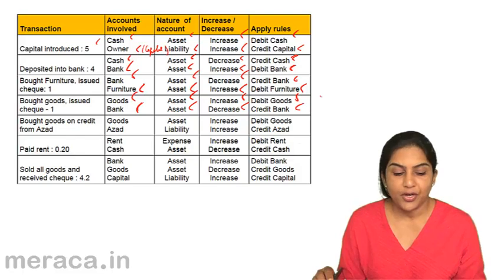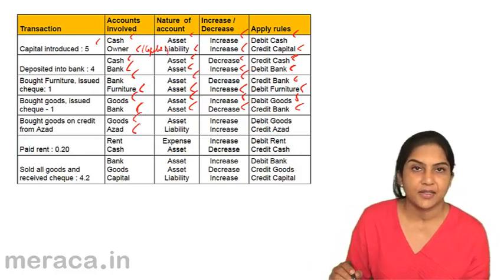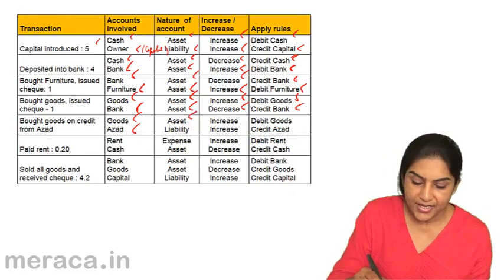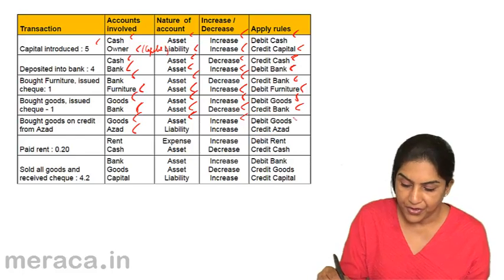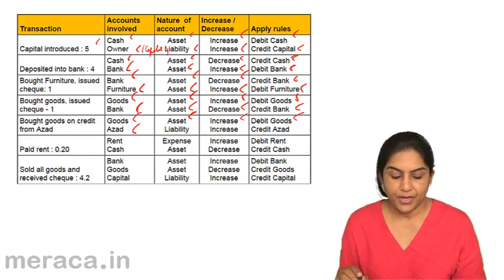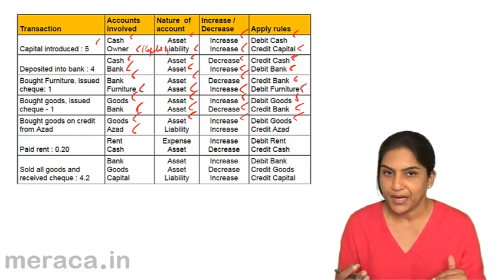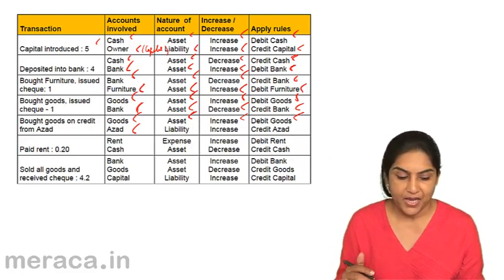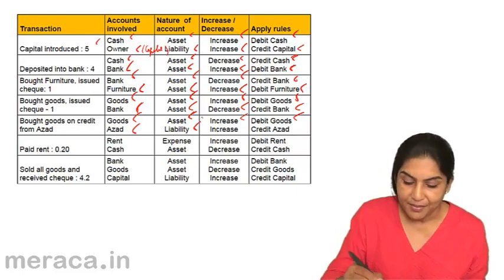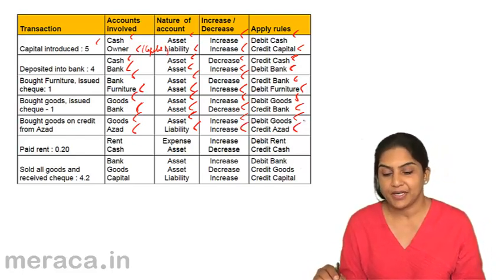Bought goods on credit from Azad. Accounts involved are goods and Azad. Goods have increased — goods is an asset, therefore we debit goods. Goods bought on credit from Azad means we purchased the goods from Azad but have not yet paid him, therefore we have a liability to Azad. Increase in liability is a credit.